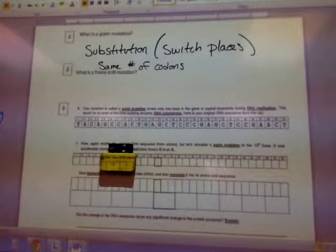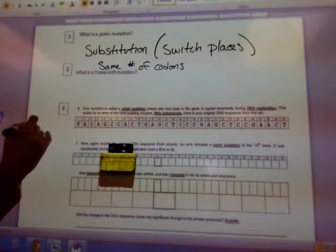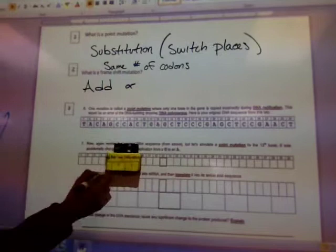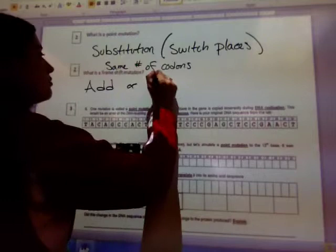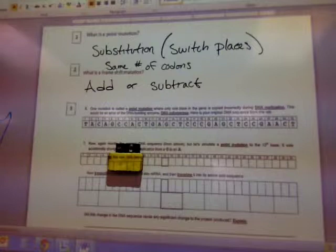Now what's different with a frameshift mutation? Add or subtract. Okay, so you can add. It takes over, it doesn't go back here. Well, you can add or subtract. Does a frameshift mutation change the number of codons? Yes.